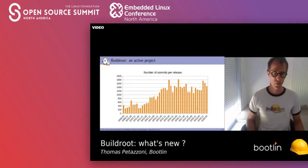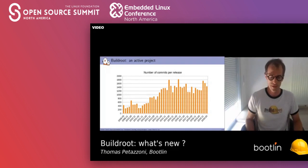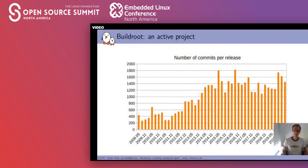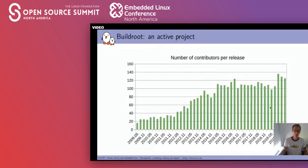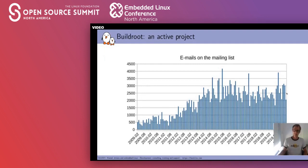Starting with the activity of the community: this graph shows the number of commits per release, and we do one release every three months. The number of commits is pretty consistent from one release to the other — between 1400 and 1600 commits per release, with a good spike recently. The number of contributors is also important; we have approximately 120 to 140 contributors per release. The mailing list activity is also a good metric — pretty constant over time with between 2000 to 3000 emails per month — in part due to the fact that all patches and reviews occur on the mailing list, just like the Linux kernel does.